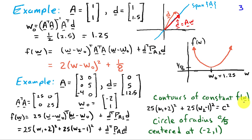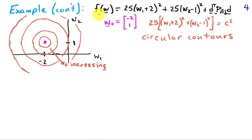Substituting for w₀ and expanding in terms of the elements of w, we have 25(w₁ + 2)² + 25(w₂ − 1)² plus the error squared term. Looking at where f(w) equals a constant: since the last term is constant, the first two terms equal some constant c². Recognizing this equation, it is the equation for a circle in w₁ and w₂ with radius c/5, centered at (−2, 1).